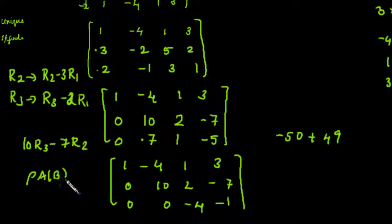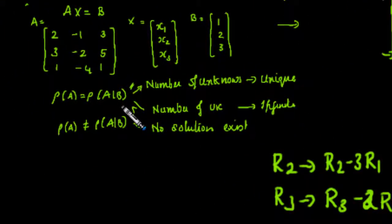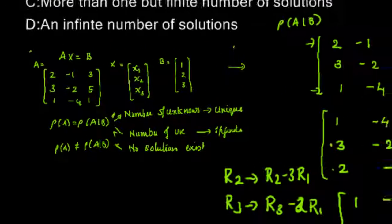The rank of A|B equals 3. What about the rank of A? The rank of A is also 3. Since we have the condition: rank of A equals rank of A|B and equals number of unknowns, the system of equations has a unique solution. So the correct answer is option B.